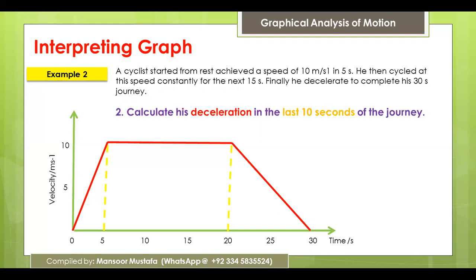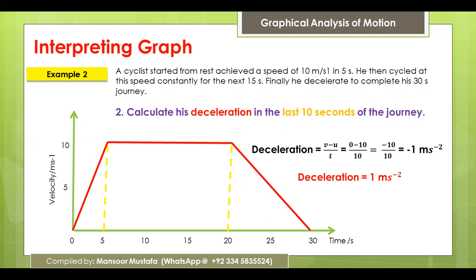To calculate deceleration in the last 10 seconds: since the speed is changing at a constant rate, we can use the formula — deceleration equals (final velocity minus initial velocity) divided by time. Final velocity is 0, initial velocity is 10 m/s, time is 10 seconds. That gives –1 meter per second squared. The negative sign indicates deceleration.